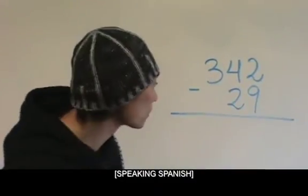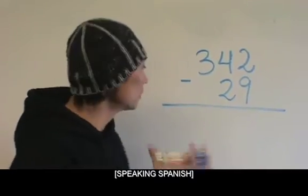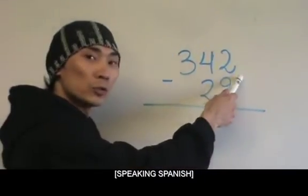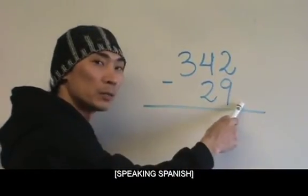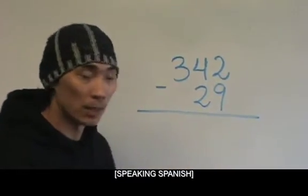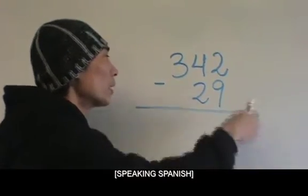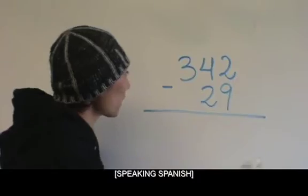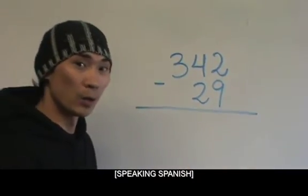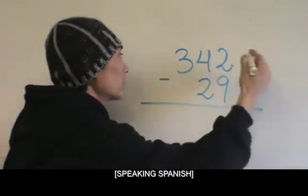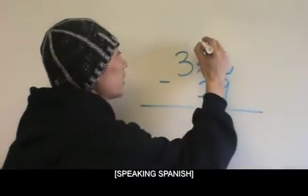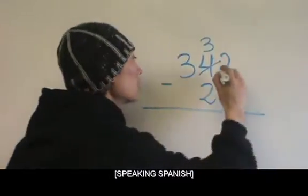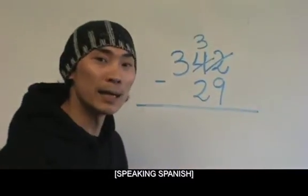So, comenzamos. Tenemos una resta de 342 menos 29. Comenzamos. 2 menos 9 no alcanza. Entonces, tenemos que tomar prestado 1 del 4. El 4 se convertiría en 3. Este 2 ya no sería 2. Se convertiría en 12.